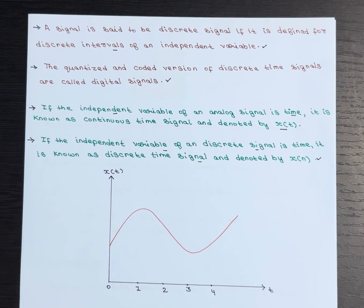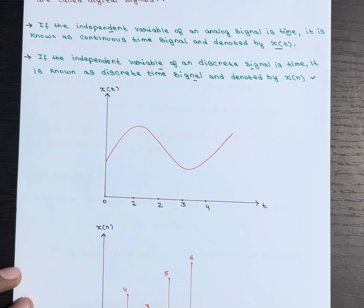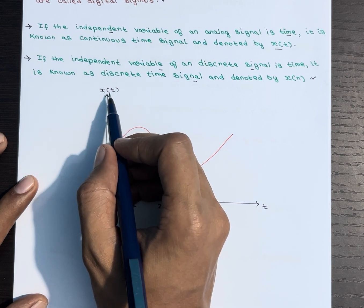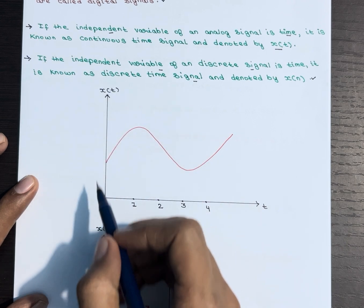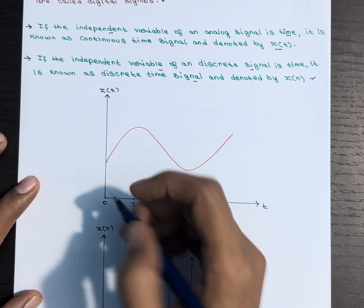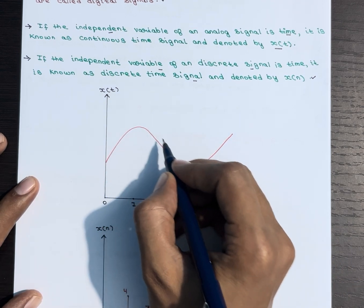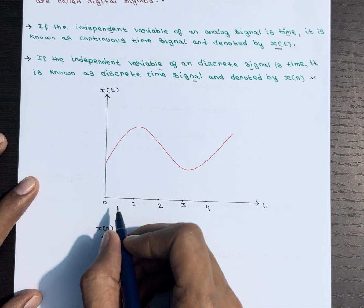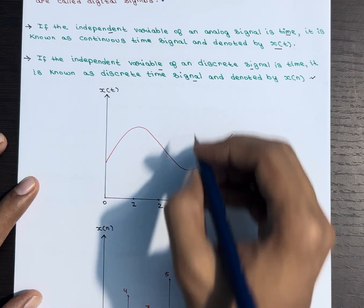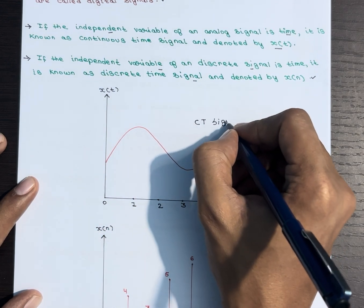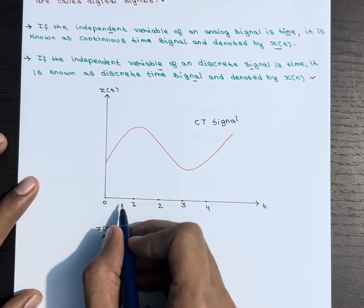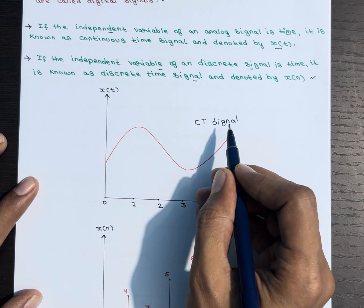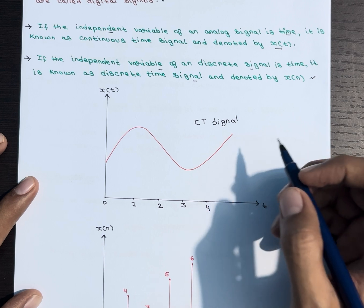Let's understand this with graphs. The graph of x(t) versus t shows a continuous time signal. The time axis is t and the signal is x(t). This signal is continuous in nature — a continuous time signal has values for all points in time within some interval. So you can get the value at 0, 0.1, 0.2, 0.3, and also 1.1, 1.2, 1.3 — this signal is continuous.